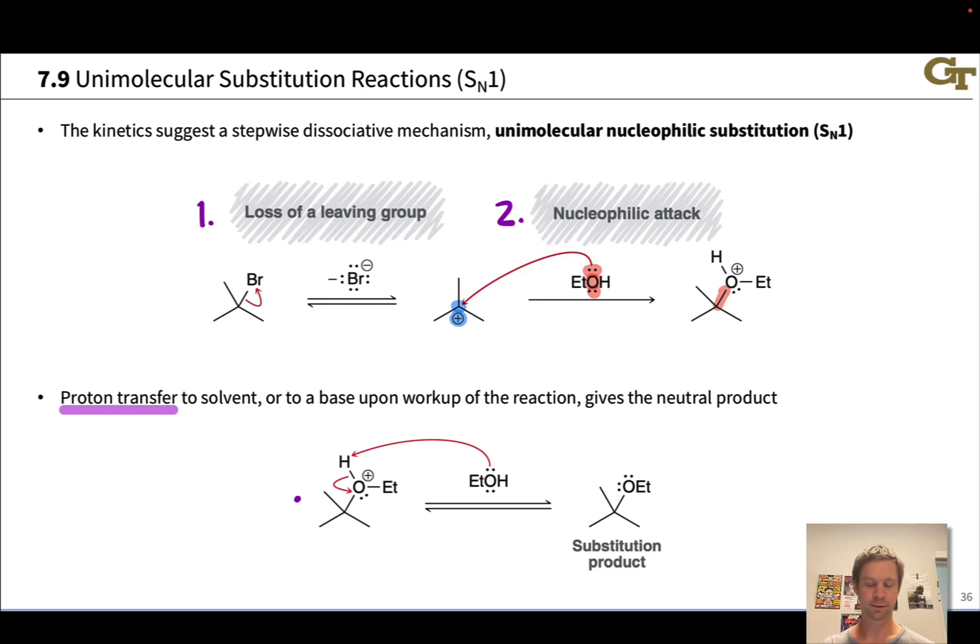This overall sequence involving loss of a leaving group followed by nucleophilic attack, and if necessary, a final proton transfer step is known as unimolecular nucleophilic substitution, or the SN1 reaction for short. The SN, as usual, refers to nucleophilic substitution, substitution of one nucleophile for another, and the 1 refers to the unimolecular transition state of the rate-determining step. So the slow step here is the first step, loss of the leaving group, and it is unimolecular. It involves just one molecule of the alkyl halide, and doesn't involve the nucleophile at all. Classic mechanism here, the SN1 reaction.